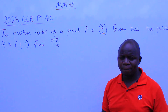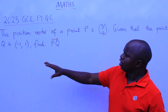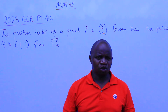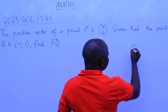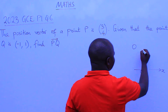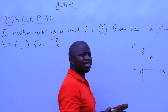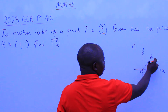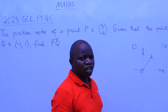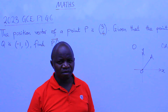We want to find the vector PQ. The question is coming from a topic called vectors in two dimensions. First of all, we need to understand the meaning of position vectors — these are vectors from the origin. If O is the origin, with the x-axis and y-axis, and we have a point A, then the position vector of A will be OA.